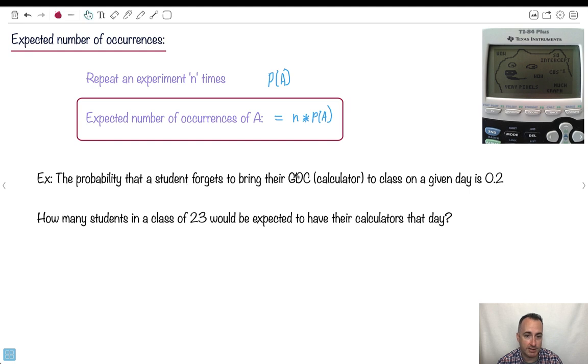Let me look at an example. We have the probability that a student forgets their GDC. The probability that they forget their calculator to class is 0.2. That means it's 20% likely that any kid forgets their calculator. Maybe it's higher in your class, I don't know. The question is, how many students in a class of 23 are expected to have their calculators that day? The key is to just decipher what they're saying.